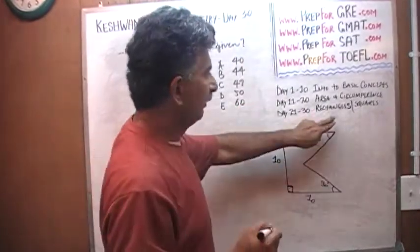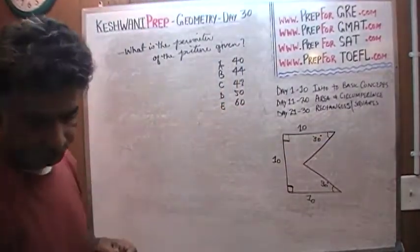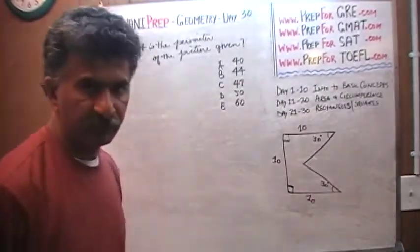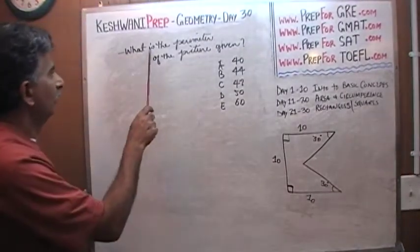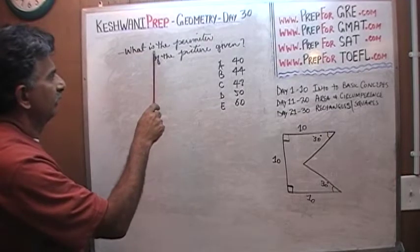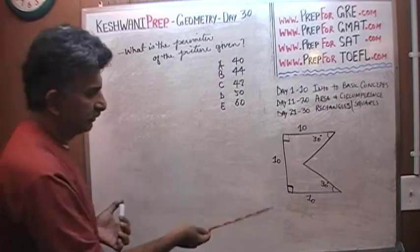Last day we are dealing with rectangles and squares. Here is the problem for today. Very simple, very straightforward problem. The question simply is, what is the perimeter of the picture given? Here is the picture that is given.